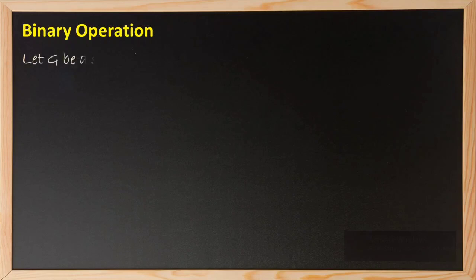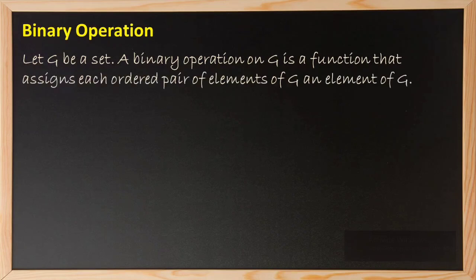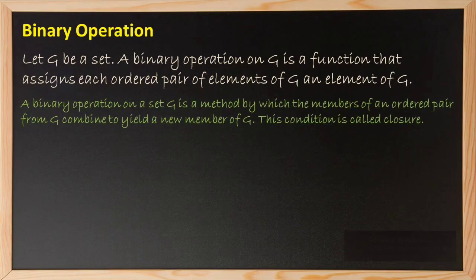Let G be a set. A binary operation on G is a function that assigns each ordered pair of elements of G an element of G. In other words, a binary operation on G is a method by which the members of an ordered pair from G combine to yield a new member of G. And this condition is called closure.